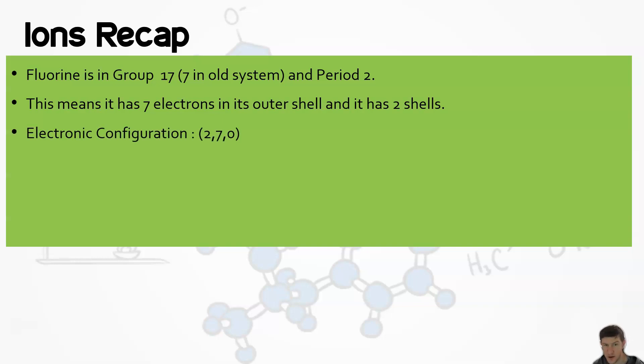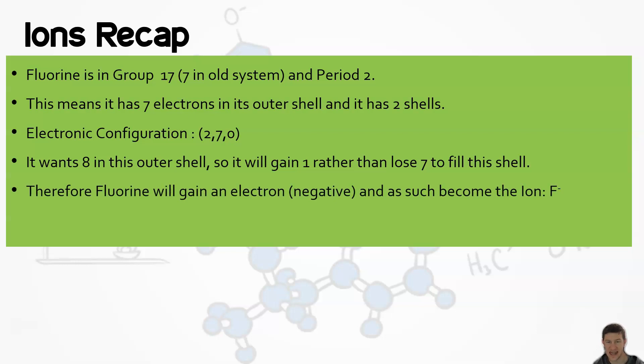How many does it want in that second shell? It wants eight, so it's going to gain one rather than lose seven to fill this shell. Therefore fluorine will gain an electron, and electrons are negative, so it becomes the ion F-. Other elements such as aluminum lose three electrons and become Al3+.